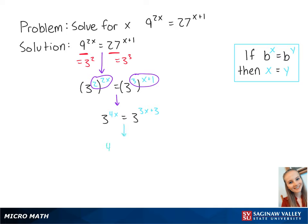We now have 4x equals 3x plus 3. If we subtract 3x from both sides, we get x equals 3. This is the final answer.